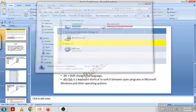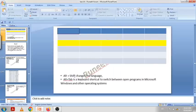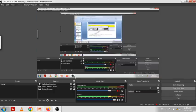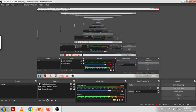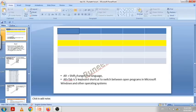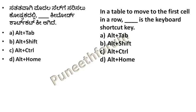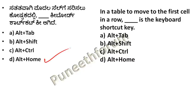You can switch the window using ALT+TAB. ALT+SHIFT is for language change — if you are using English (United States), you can switch languages. This is the practical thing. So the right answer for the first cell in a row shortcut is ALT+HOME. That is the correct shortcut key.